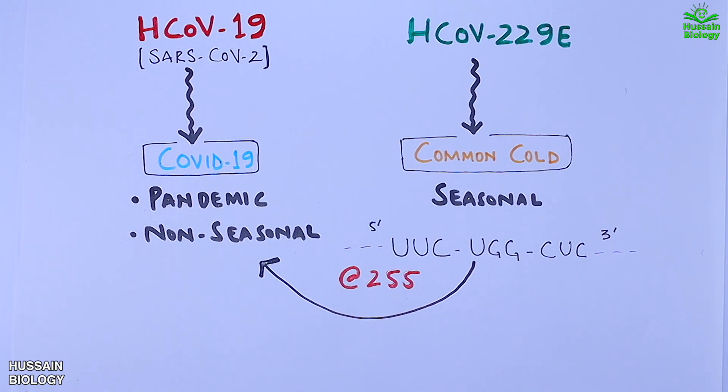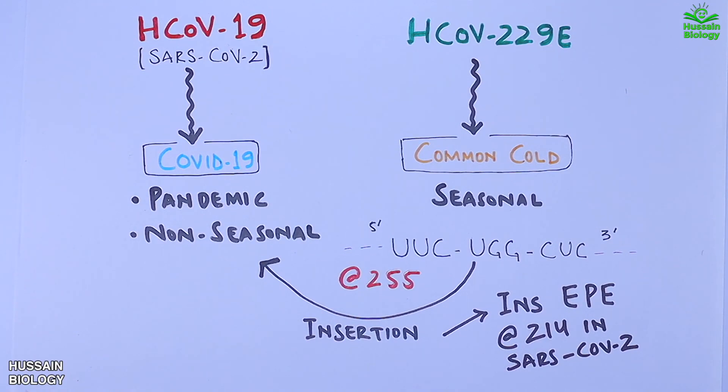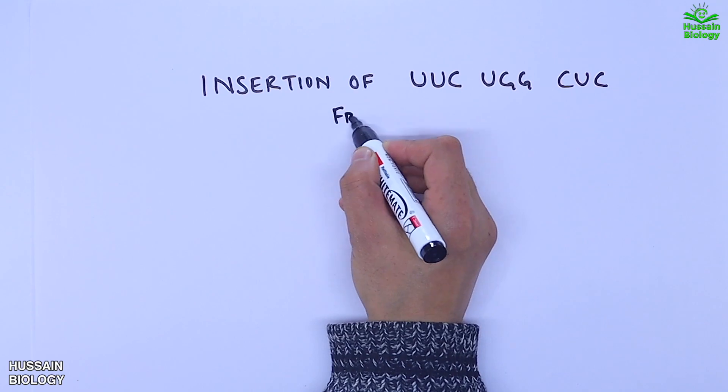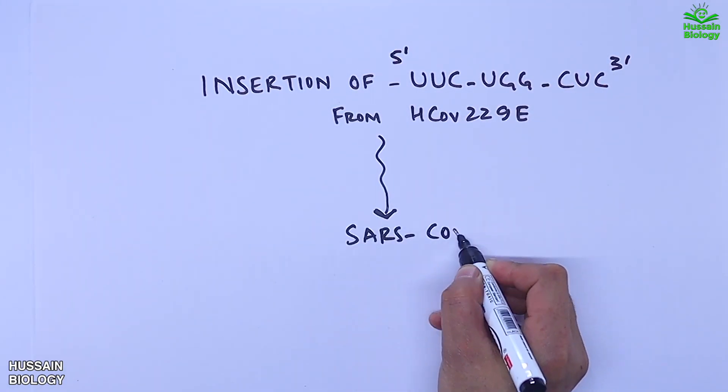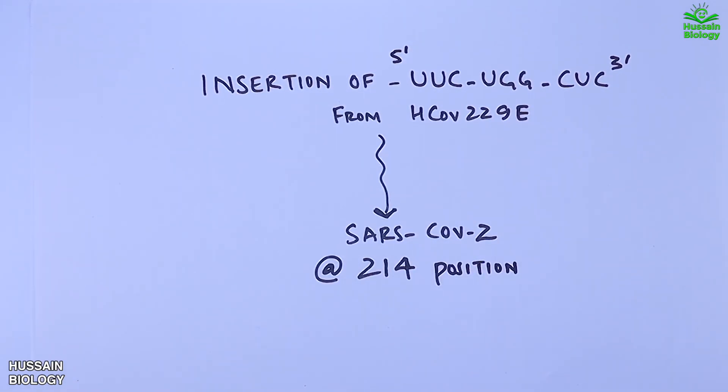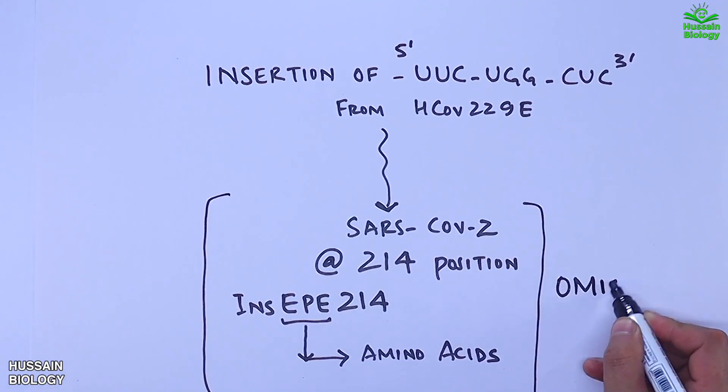So it's a kind of insertion referred as INS-EPE-214 in SARS-CoV-2. So in simple words, the insertion of UUC, UGG, CUC from HCOV-229E virus into the SARS-CoV-2 virus at 214 position. So a mutation called INS-EPE-214 is found in the Omicron variant of SARS-CoV-2.